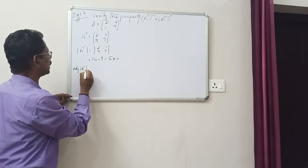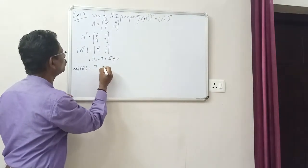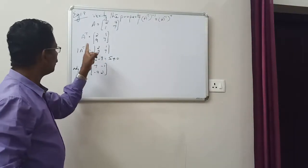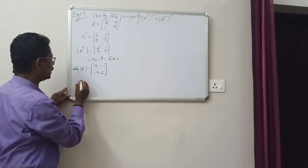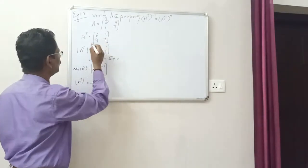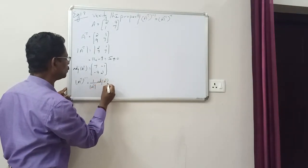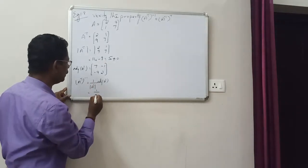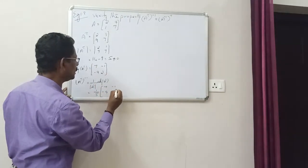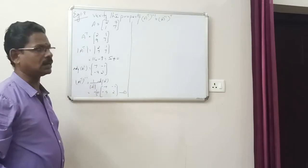Now, adjoint of A transpose. For a 2x2 matrix, we swap the diagonal elements and change the signs of the off-diagonal elements. So adjoint of A transpose is [[7, -1], [-9, 2]]. Therefore, A transpose inverse equals 1 by determinant of A transpose, into adjoint of A transpose, which equals 1/5 times [[7, -1], [-9, 2]]. This is equation number 1, so LHS is complete.